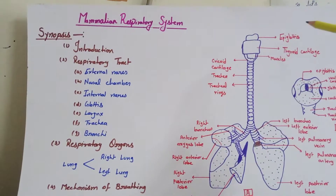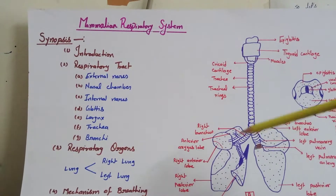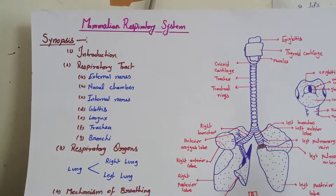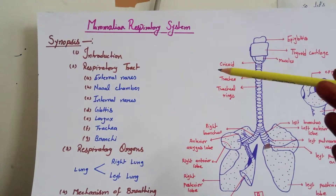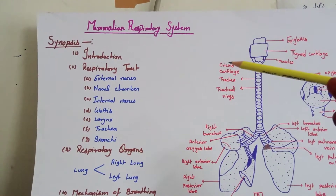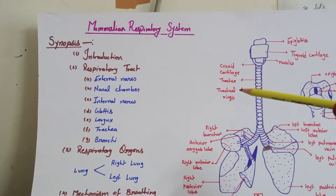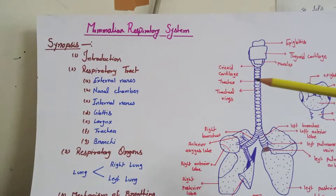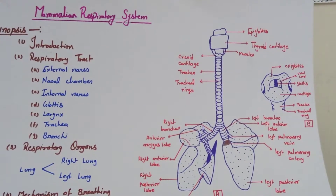In the respiratory tract, there is a complete passage through which air enters and goes back to the atmosphere. The first point is the external nares — this is just a pair of nares which are present on the external body of the rabbit, and they open into the nasal chamber.